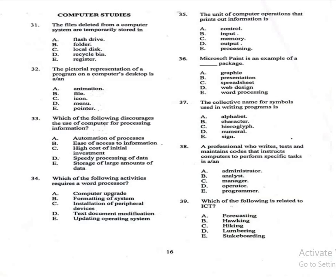Question 31: The files deleted from a computer system are temporarily stored in — A: flash drive, B: folder, C: local disk, D: recycle bin, E: register. The correct answer is D, recycle bin. Deleted files go to the recycle bin and can be restored from there.